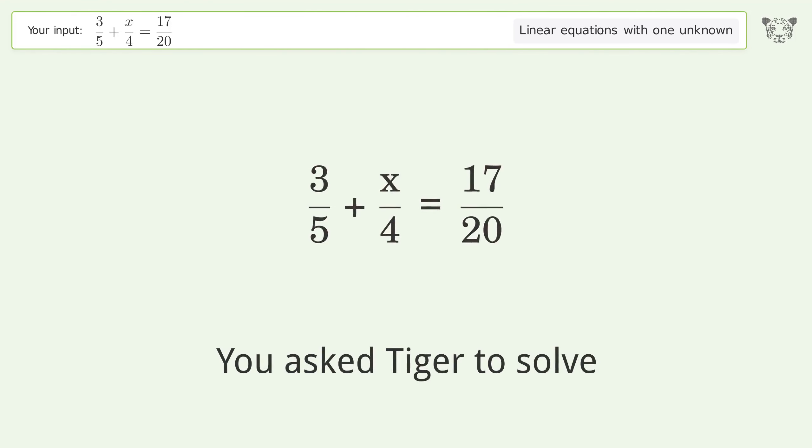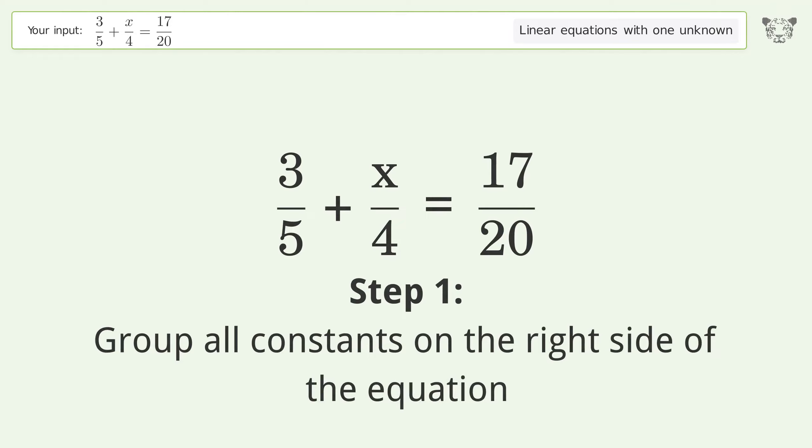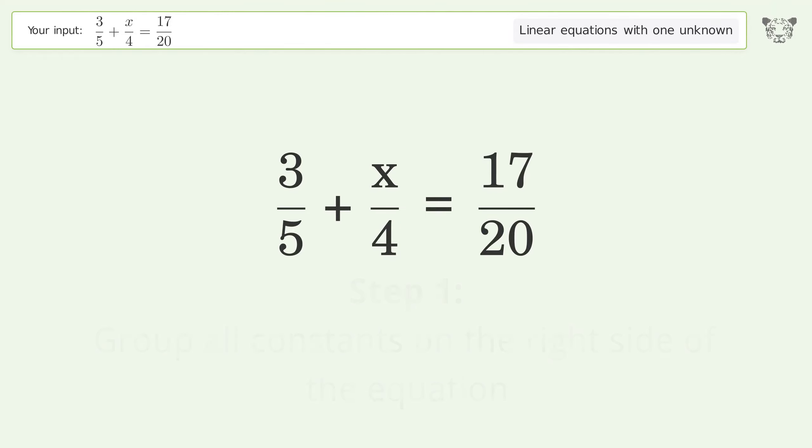You asked Tiger to solve this. This deals with linear equations with one unknown. The final result is x equals one. Let's solve it step by step. Group all constants on the right side of the equation. Subtract three over five from both sides.